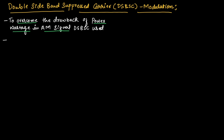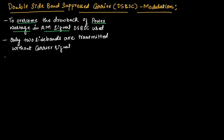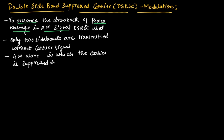It is a method of transmitting the message signal where only two sidebands are transmitted without the carrier signal. We can say it is an amplitude modulated wave in which the carrier is suppressed. Such type of modulation is known as double sideband suppressed carrier modulation.